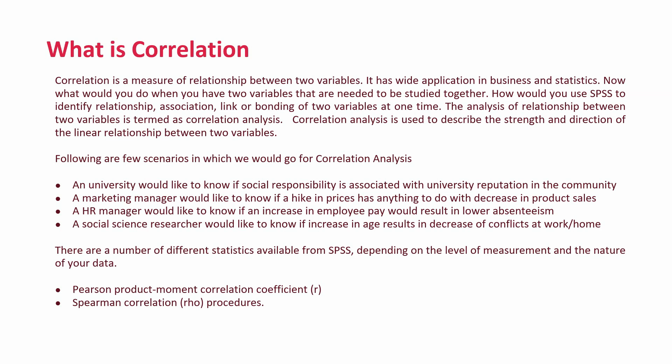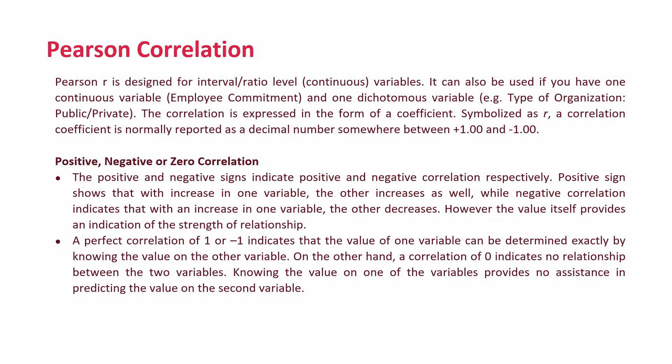There are a number of different statistics available from SPSS depending on the level of measurement and the nature of your data. It could be the Pearson product-moment correlation coefficient — Pearson correlation — when you have a variable on an interval or ratio scale (continuous variable). When the variable is on an ordinal scale, you go for Spearman correlation. The interpretation of both is the same.